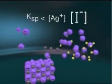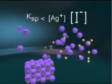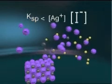This means that the product of the silver and iodide concentrations exceeds the solubility product constant.